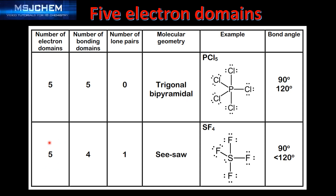In our next example we have five electron domains, four of which are bonding domains, giving one lone pair of electrons. The molecular geometry is seesaw. An example is SF4 — here's the Lewis structure. The bond angles are 90 degrees and less than 120 degrees. The less-than-120-degree bond angle is caused by the extra repulsion from the lone pair of electrons on the sulfur atom.